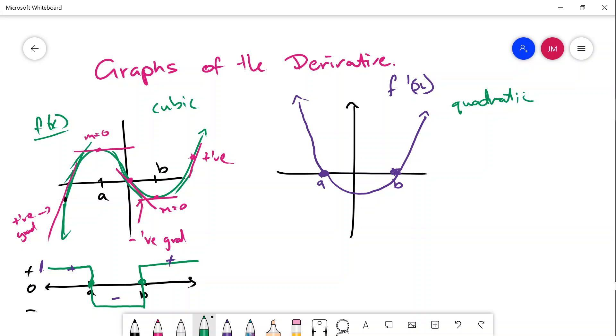So if we had a cubic, the derivative graph will be a quadratic. If I had a quadratic, the derivative of that would be linear. If I had a quartic, power of 4, the derivative would be a cubic, power of 3.